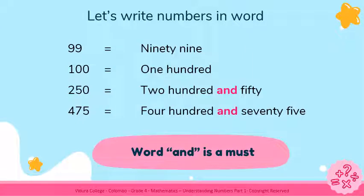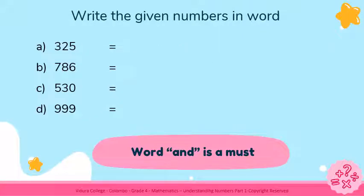Let's write numbers in words now. 99, 100, 250, 475. In the last two examples, you can see I have colored the word 'and' in pink, because it is a must — you have to use the word 'and' when we write numbers in word. Otherwise the whole thing is wrong. Now children, try to write the given numbers in word. We will check the answers in a bit.